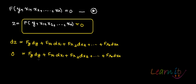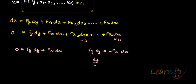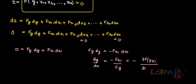If you want to find out the change in y due to the change in x1, you set dx2, dxn, and all others equal to zero. What is left is: 0 = f_y dy + f_{x1} dx1. This gives f_y dy = -f_{x1} dx1, or dy/dx1 = -f_{x1}/f_y = -(∂f/∂x1)/(∂f/∂y).